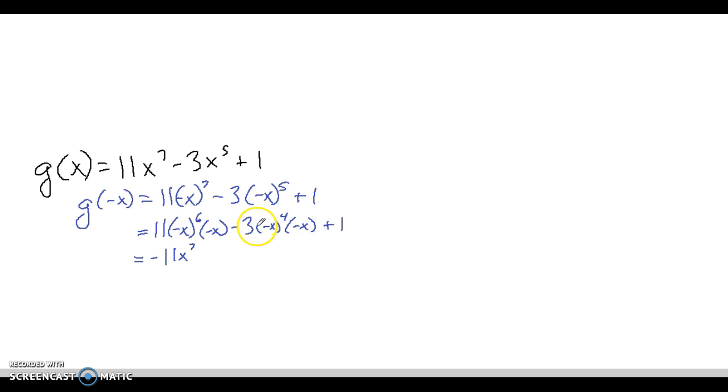Again, from the previous problem, this would be the same thing as positive x to the fourth. Multiplied by a negative x gives me negative x to the fifth. But times a negative out here is going to give me positive 3x to the fifth.